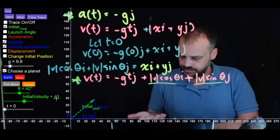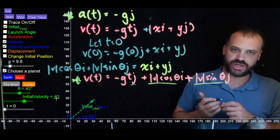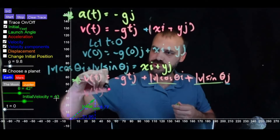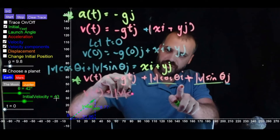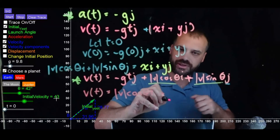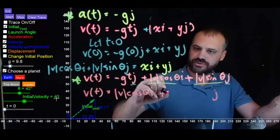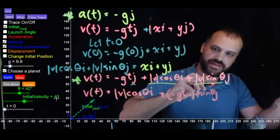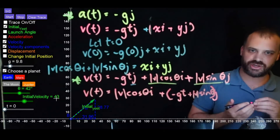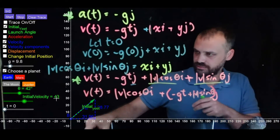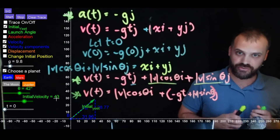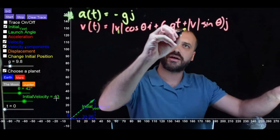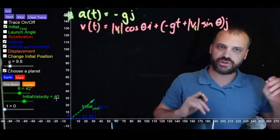We can tidy this up because we have a j component in two places. The real equation to memorize is: velocity with respect to t equals the magnitude of the initial velocity times cos θ i, plus the quantity negative gt plus the magnitude of the initial velocity times sin θ, all times j. This is the velocity of a projectile over time. I'll add a subscript i to denote initial velocity throughout.